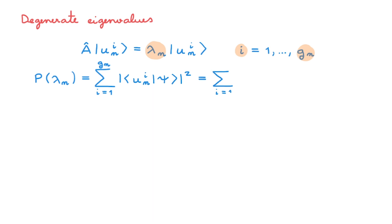In the videos on measurements we discuss how the probability of measuring eigenvalue lambda n is given by the sum over the degenerate subspace of the absolute values squared of the brackets between the associated eigenstates and the state psi of the system. Again, we can write this in terms of the C expansion coefficients.